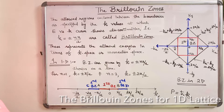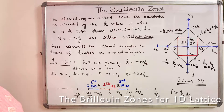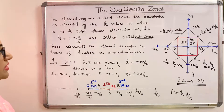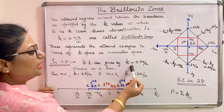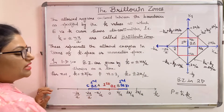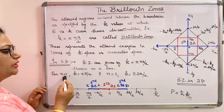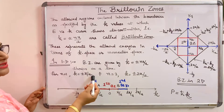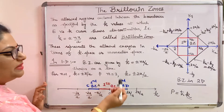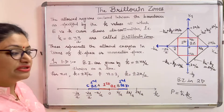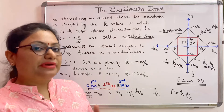Let us see the Brillouin zones in one dimension and two dimensions — that is, the allowed regions in terms of the k vector. In one dimension, Brillouin zones are given by k equal to plus or minus n pi by a, shown on a line. For n equal to 1, we get k equal to plus or minus pi by a, and for n equal to 2 we get k equal to plus or minus 2 pi by a, which represent the zone boundaries.